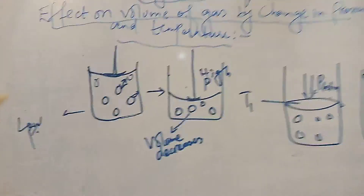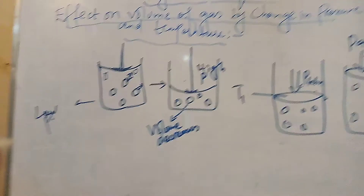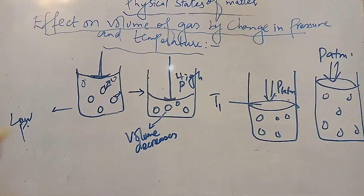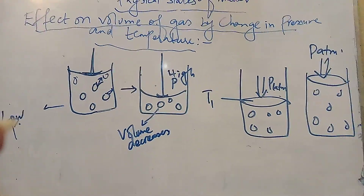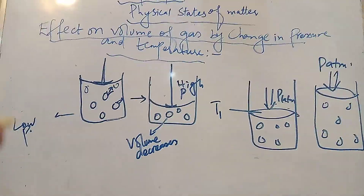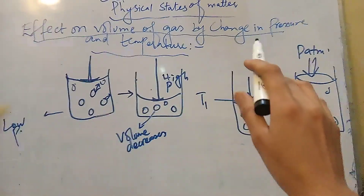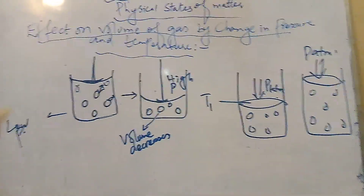It means when we increase the pressure on a particular volume of the gas, then the volume will decrease. This is the effect on the volume of the gas by change in pressure.